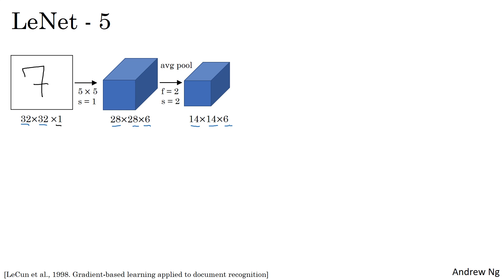The height and width of these volumes aren't entirely drawn to scale. Next, you apply another convolutional layer. This time, you use a set of 16 filters, 5 by 5. Back when this paper was written in 1998, people didn't really use padding or were always using valid convolutions, which is why every time you apply a convolutional layer, the height and width shrinks. So here you go from 14 by 14 down to 10 by 10.